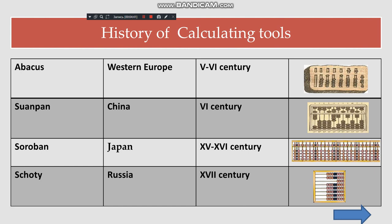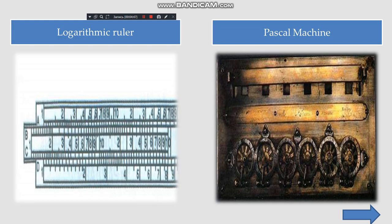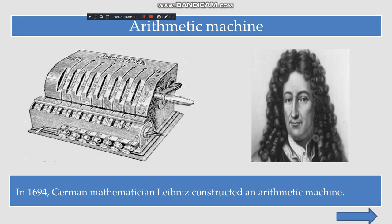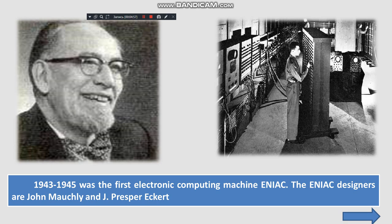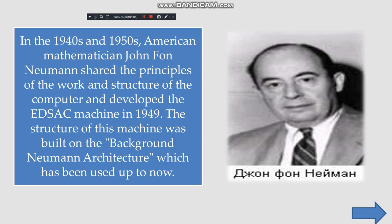The history of calculating tools includes the abacus — the swanpan and soroban — used in Russia and Western Europe, the arithmetic machine, and the analytical engine of Charles Babbage. In the 1940s and 1950s, American mathematician John von Neumann shared the principles of the work and structure of the computer and the development of the EDVAC machine. The structure of this machine was built on von Neumann architecture, which has been used up to now.